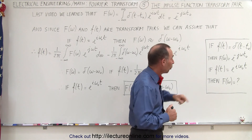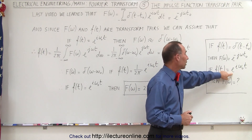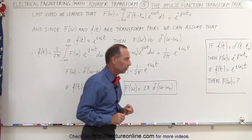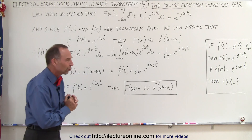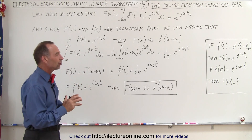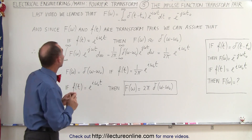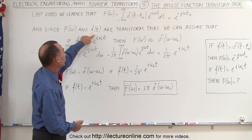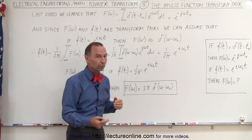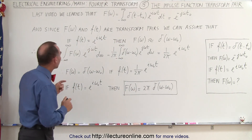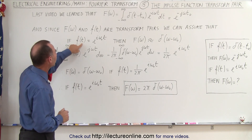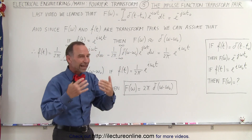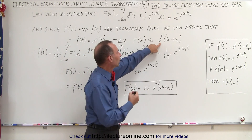Now we're going to reverse it. What if the input function was equal to e^(iωt)? What will then be the Fourier transform? We're going to do something that at first may look a little bit wacky, a little bit magical, but actually it's pretty straightforward. We're going to assume that if the input function is e^(iωt), then the Fourier transform should take some form of the delta function, the impulse function.